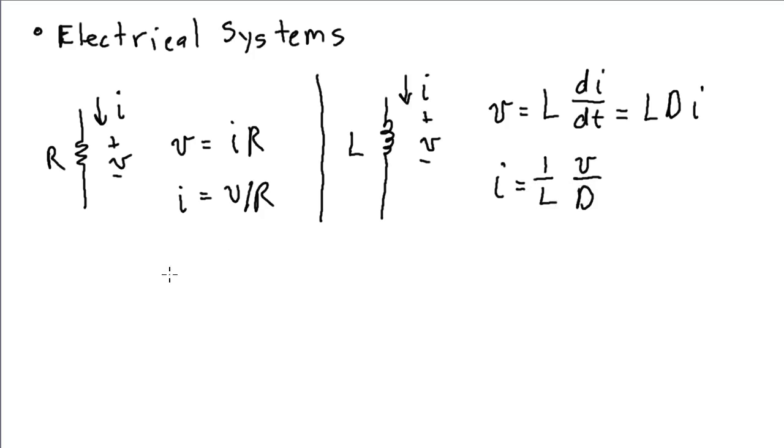And then finally, for capacitor, capacitance C, voltage V across the capacitor, current I. It's easiest to write the expression for the current in terms of the voltage first. I is equal to C dV/dt.